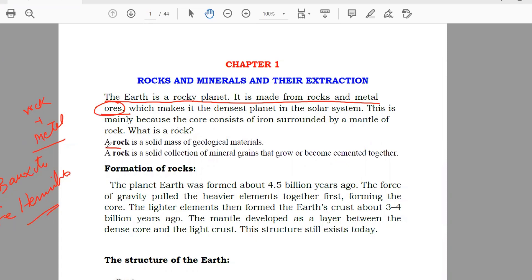Rock. What is a rock? Rock is a solid mass of geological materials, which means the minerals are there. Or rock is a solid collection of mineral grain that grow together and cement it together. For example, there are small particles, they combine together and they stick together. Then they form the rock.